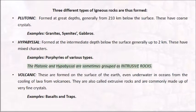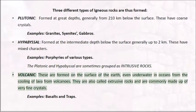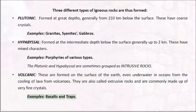The plutonic and hypabyssal rocks are sometimes grouped as intrusive rocks. Volcanic rocks are formed on the surface of the earth, even underwater in oceans, from the cooling of lava from volcanoes. They are also called extrusive rocks and are commonly made up of very fine crystals. Examples include basalts and traps.